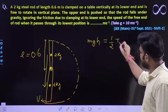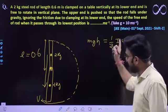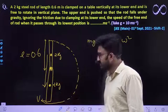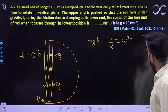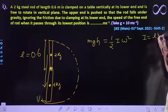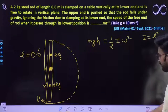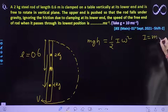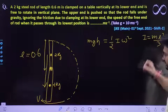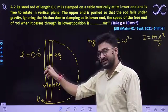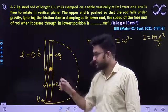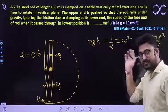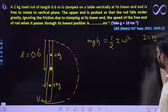The rotational kinetic energy is equal to half I omega squared, where I is the moment of inertia along the hinge axis. Since the rod is hinged at its lowermost end, the moment of inertia is I = ML²/3.